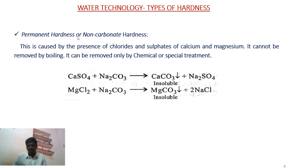Next is permanent hardness. This is due to the presence of sulphates and chlorides of calcium and magnesium. Directly, we cannot remove this by heating or boiling. We have to treat these sulphates and chlorides with sodium carbonate. The calcium and magnesium salts are then converted into their carbonates, and we can remove these carbonates by simple filtration. This is called permanent hardness or non-carbonate hardness.